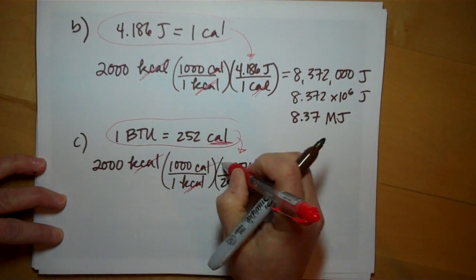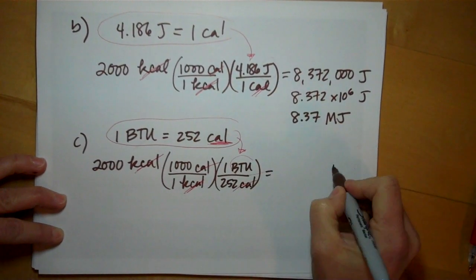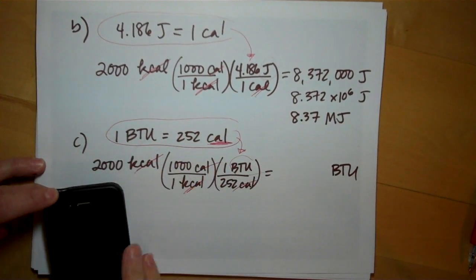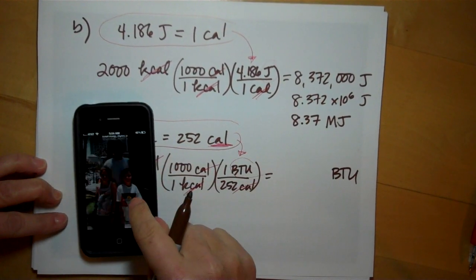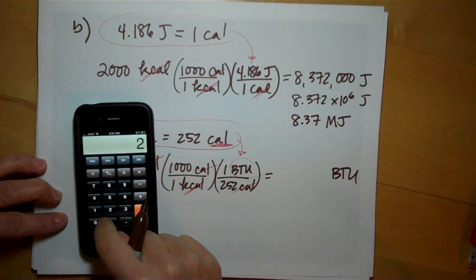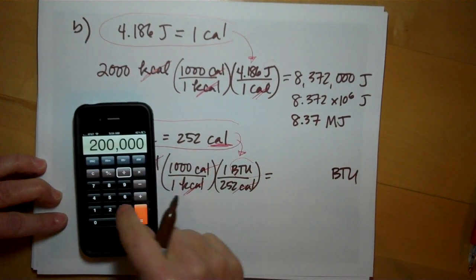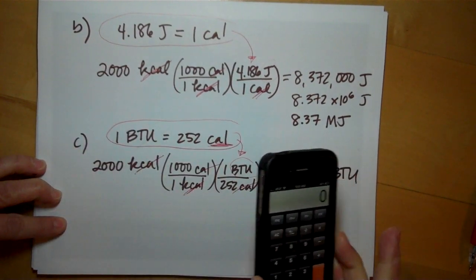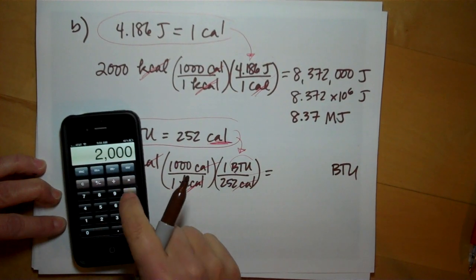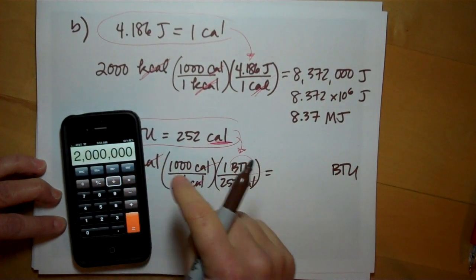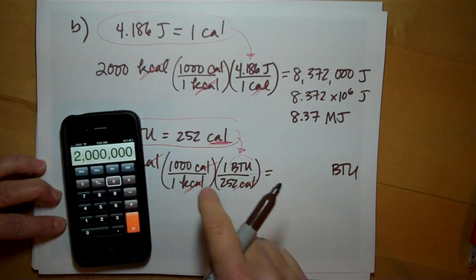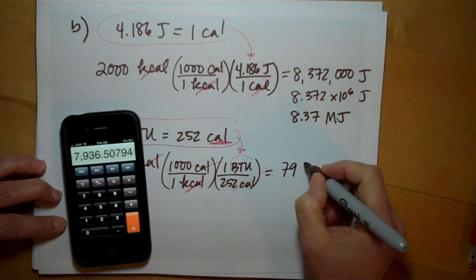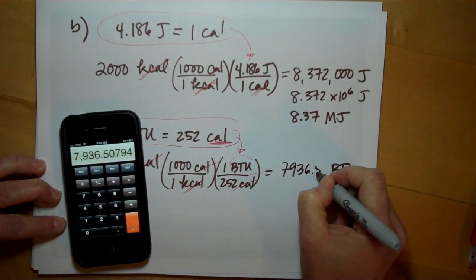So it takes 252 calories to equal one BTU. Calories will cancel. The only unit left now is the BTU, British Thermal Unit. Doing this math on the calculator, this is 200,000. Wait, 200,000 divided by 252 is not right. What is wrong? 2000 times 1000 divided... oh, 2 million. I'm sorry. Divided by 252 is 7936.5 BTUs.